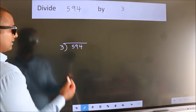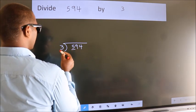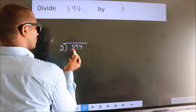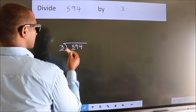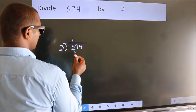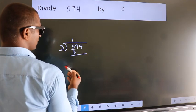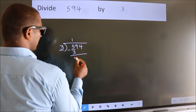Next, here we have 5, here 3. A number close to 5 in the 3 table is 3 ones, which is 3. Now we should subtract. We get 2.